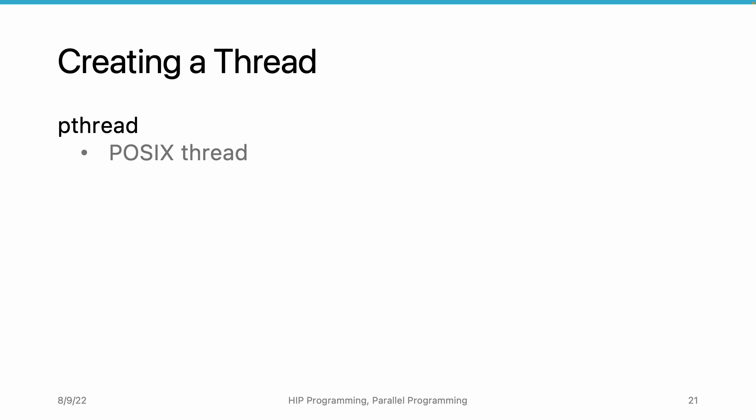POSIX is a standard API set used by different operating systems. POSIX includes many APIs such as system call APIs, network communication APIs, and mathematics APIs. Here, we only discuss the APIs related to multithread computing.